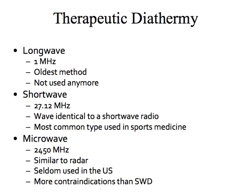There are three general types of therapeutic diathermy units. Longwave ran on a 1 megahertz frequency — it's the oldest method and is not utilized anymore. Shortwave is the most commonly used in sports medicine; the waves are identical to shortwave radio, most often at 27.12 megahertz. It can be further divided into continuous, which is not used anymore because it would get too hot, and pulsed, which is the most often used type.